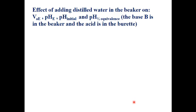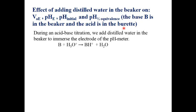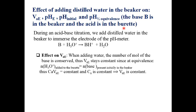Now, in the same way — but with the weak base in the beaker and the acid in the buret — what happens when we add distilled water to immerse the electrode? Does it have any effect on VA equivalence? No. Why? Because the number of moles of acid added from the buret will be the same, so the volume VAE is constant and does not change upon adding water.